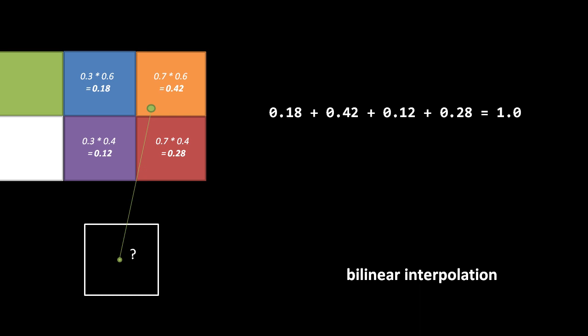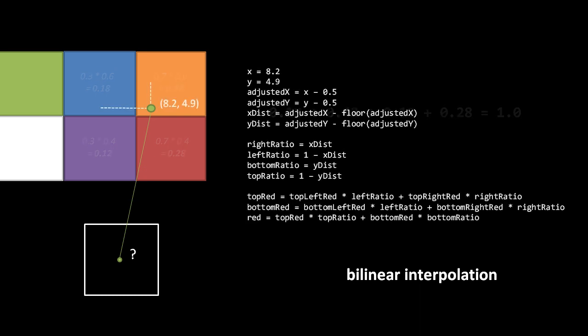Looking at a bit of the code, we can use our coordinate to get the distances and from the distances ratios. We then use the ratios to first compute the red component interpolated between the two top pixels, then the red component interpolated between the two bottom pixels, and last we get our final red value by interpolating between these composited top and bottom red values. And we simply then do the same for the green channel and the blue channel, and we get our color value.